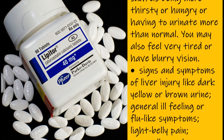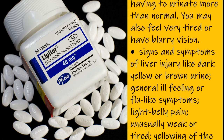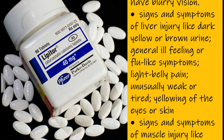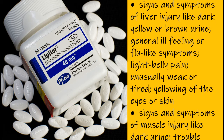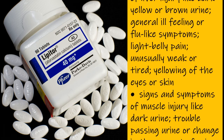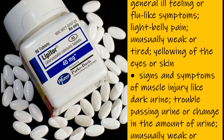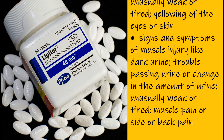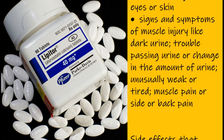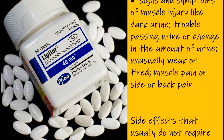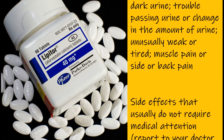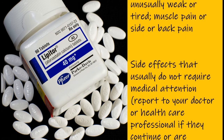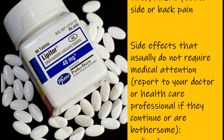Signs and symptoms of high blood sugar such as being more thirsty or hungry, or having to urinate more than normal. You may also feel very tired or have blurry vision. Signs and symptoms of liver injury like dark yellow or brown urine, general ill feeling or flu-like symptoms, light belly pain, unusually weak or tired, yellowing of the eyes or skin.